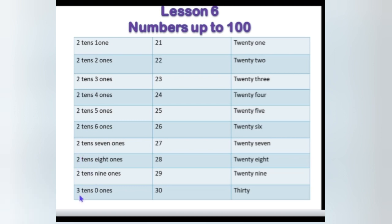What comes after 29? Yes, 30. In 30, how many tens are there? Yes, 3 tens, 0 ones. 3 tens and 0 ones make 30.